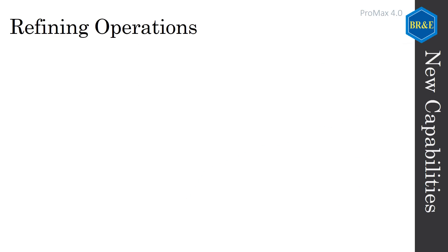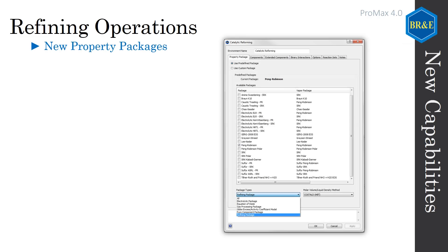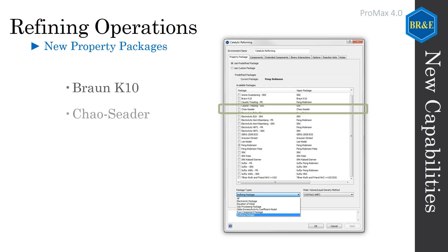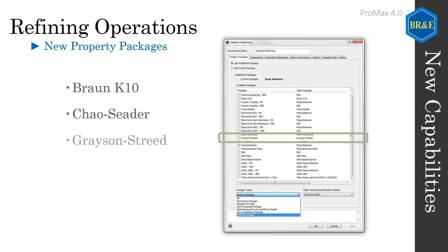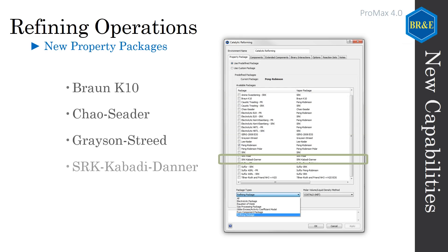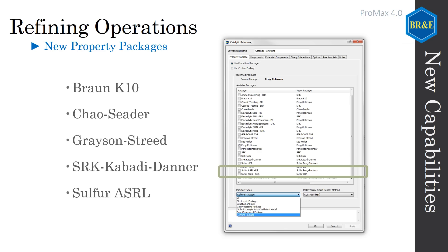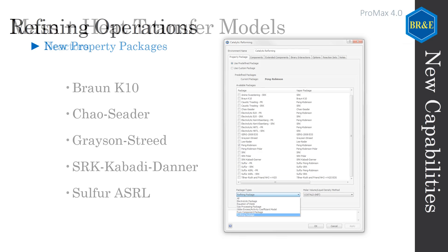Several new refinery-focused property packages like Bron K-10, Chow Cedar, Grayson Streed, SRK Cabani Danner, and Sulphur ASRL have also been added, giving you even greater control over your simulation.